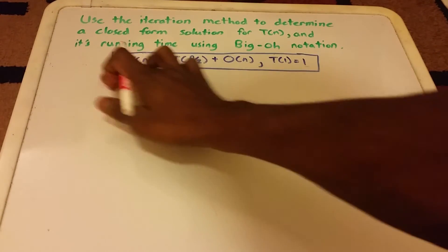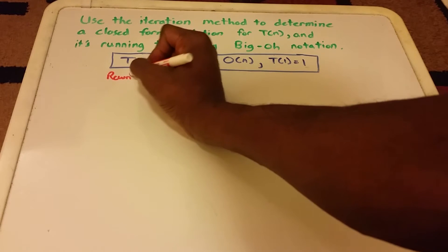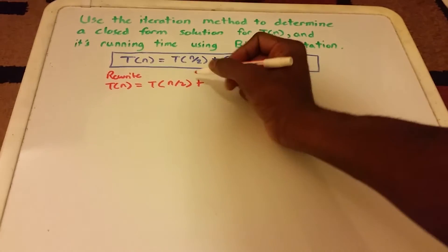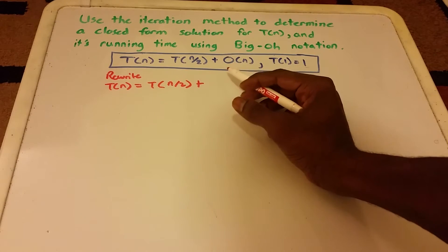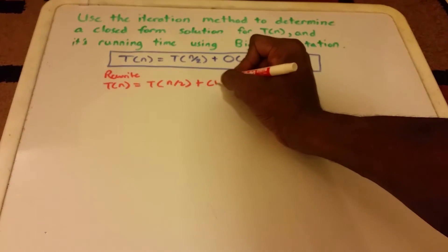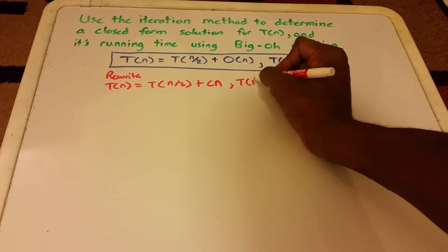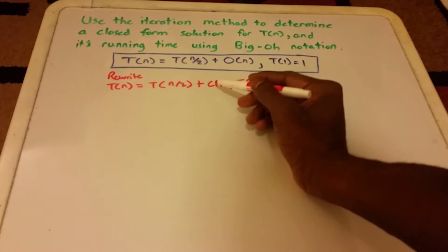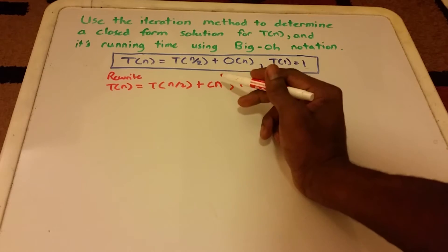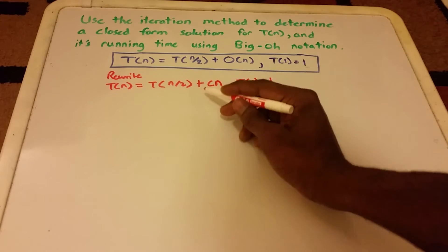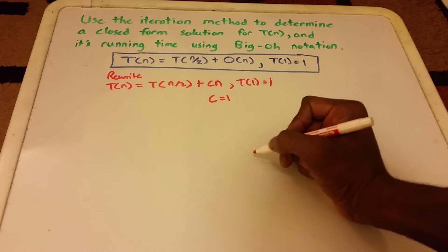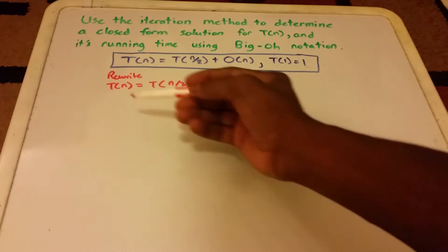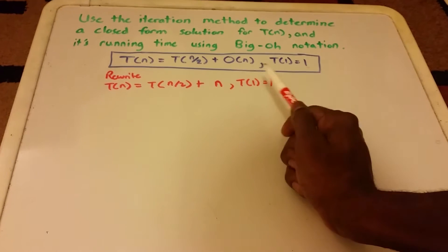Let's erase this first. We need to rewrite the equation, so we get T of n equals T of n divided by 2 plus — since big O of n means some constant times n — we have C times n. We still have our base case T of 1 equals 1. We can choose a value for the constant; it'll be easier, so I'm just going to choose C equal to 1. So our recurrence relation is T of n equals T of n divided by 2 plus n, and the base case still stays the same.